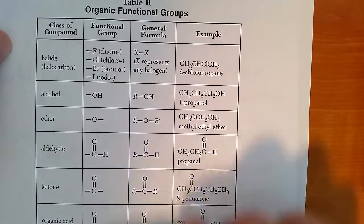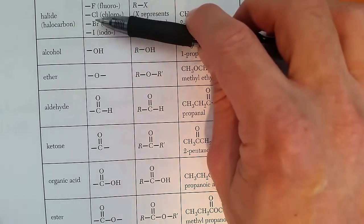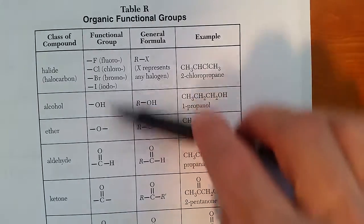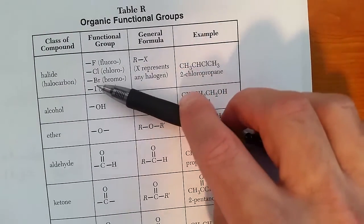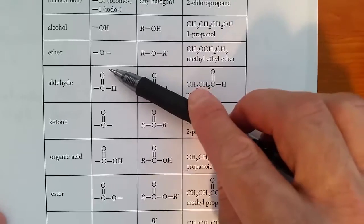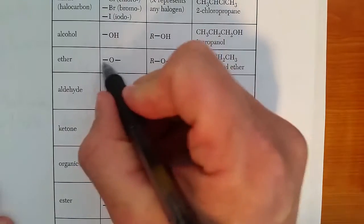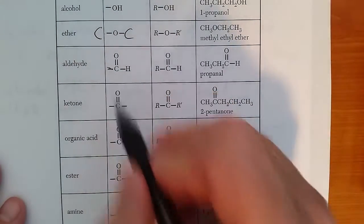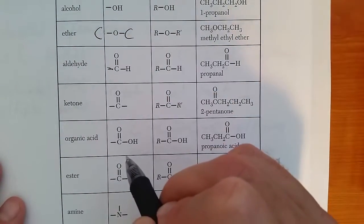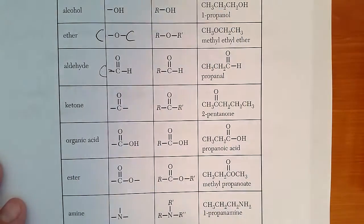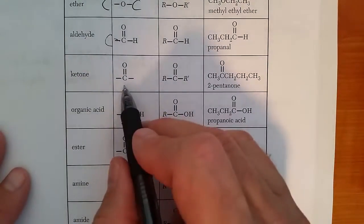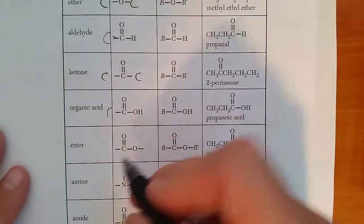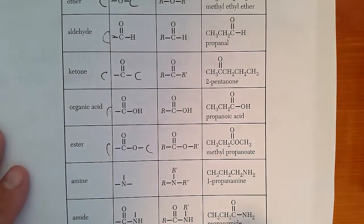The functional group is what makes the organic molecule the type that it is. So halides will have a fluorine, chlorine, bromine, or iodine. Alcohol is an OH, ether, an O. And this means that there's carbons on either side. This line here means that there's going to be carbons over here. Ketone, carbon and carbon. So anytime you see one of these lines, it's empty. Here, there's a carbon on the other side of the line.